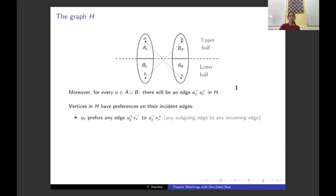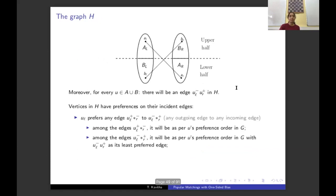The vertex preferences in H are as follows: every vertex prefers outgoing edges to incoming edges. Among outgoing edges, the preference order follows the original order in G; similarly among incoming edges, the order follows the original order in G.